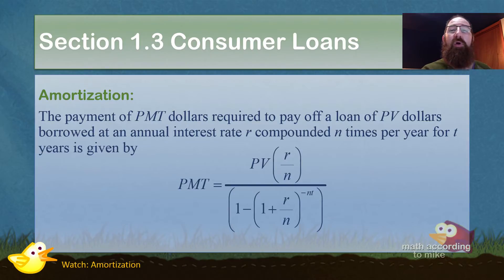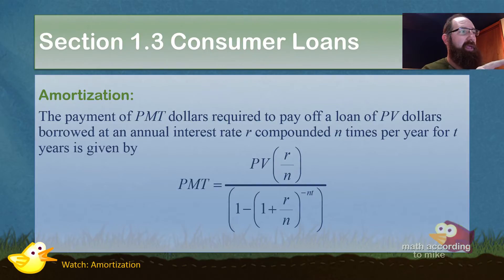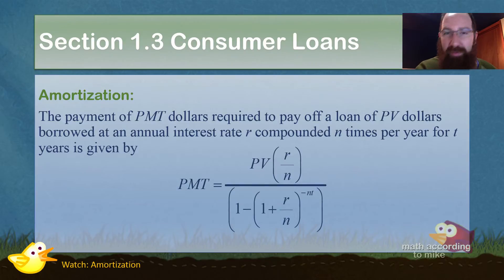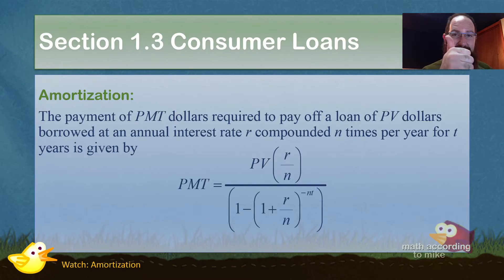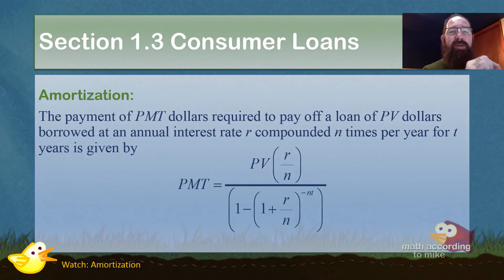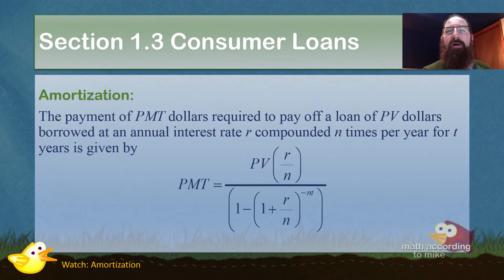If you've ever taken a romance language or even Latin, you'll notice the word 'mort,' M-O-R-T. What does mort mean? If you said 'to die' — actually it's 'to die,' you're correct. So amortization is used to kill off a loan.